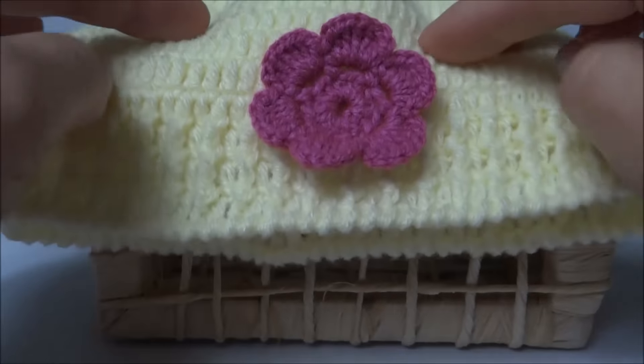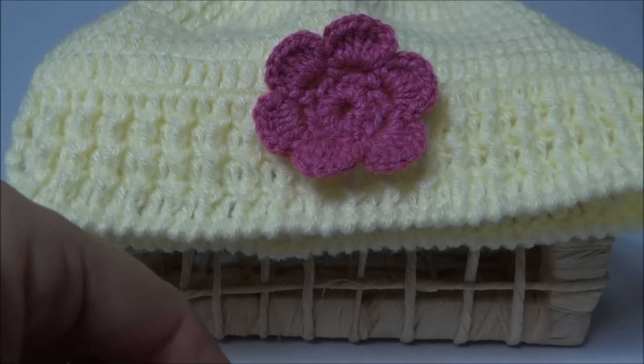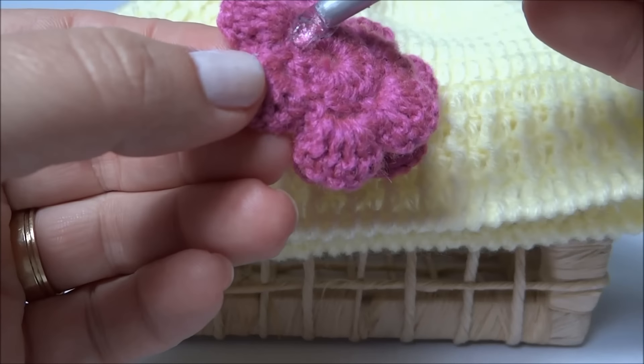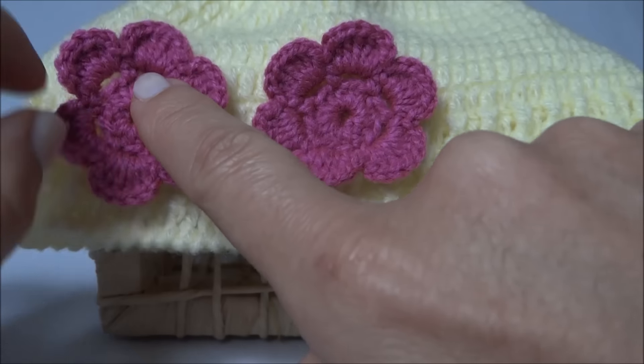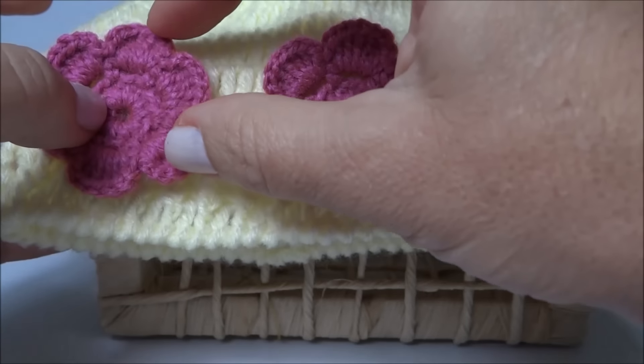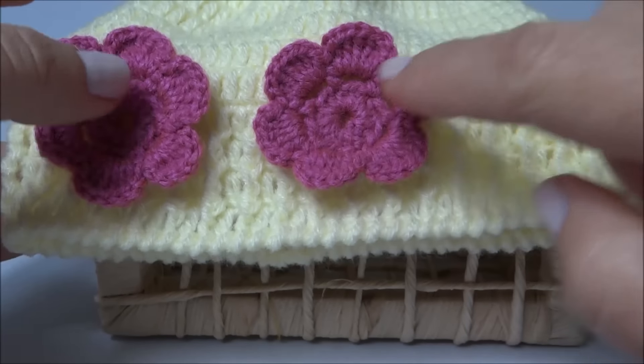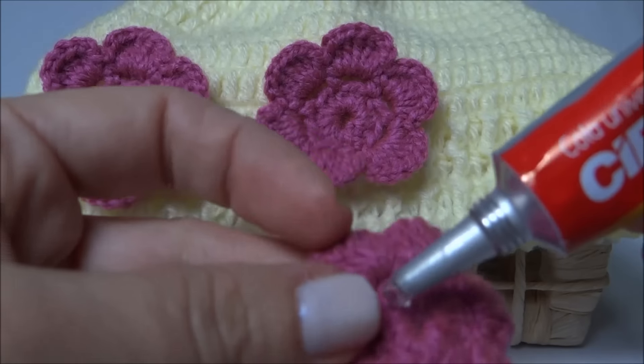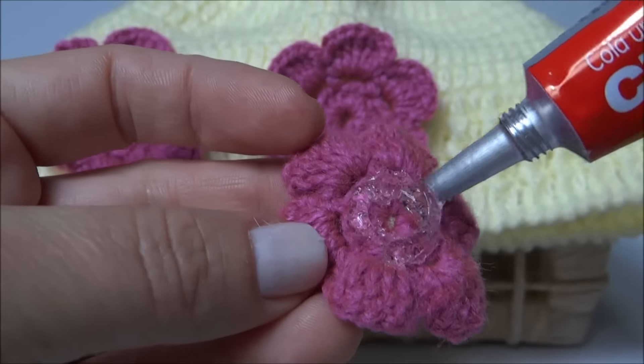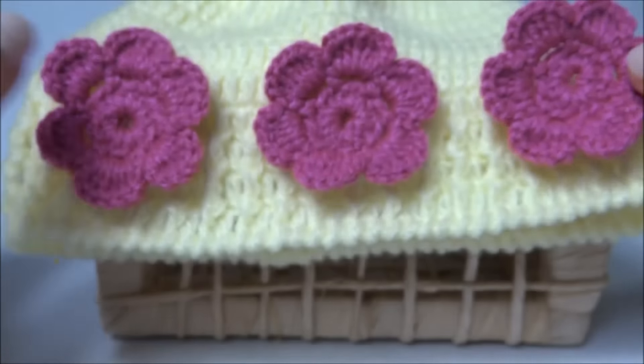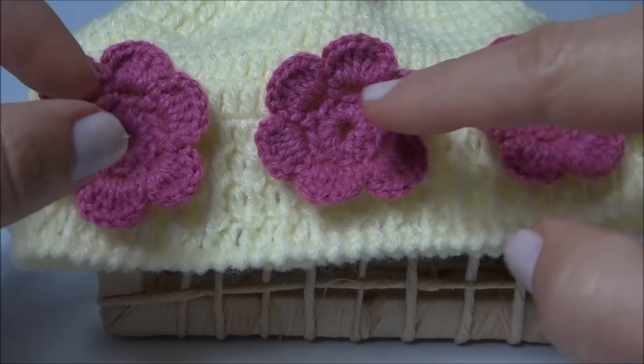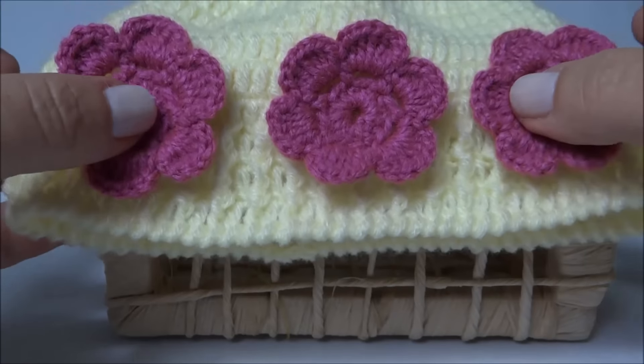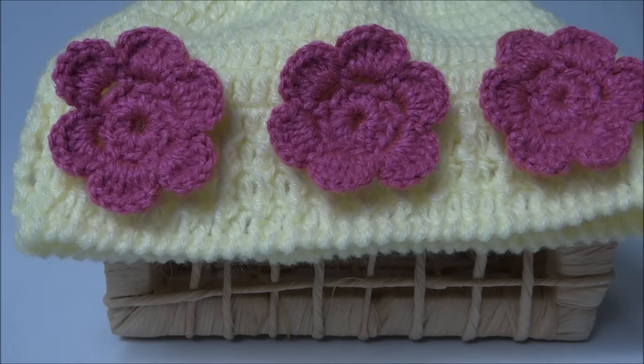Agora posso colar as outras duas. Venho, pego a cola, passo no miolinho, só no miolinho, para deixar as pétalas aparecendo, as pétalas soltinhas. Aqui eu meço mais ou menos um dedo de distância e venho com a próxima e repito o mesmo processo do outro lado, deixando mais ou menos um dedo de distância e aplicando na mesma direção. Posso me guiar pela linha das carreiras. Agora eu vou esperar mais ou menos uns cinco, dez minutinhos, é bem rapidinho para colar. E depois eu venho colando também os botões.